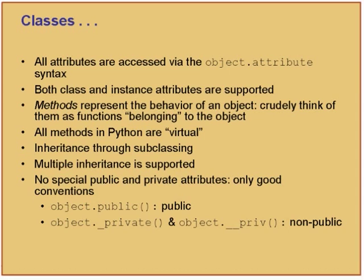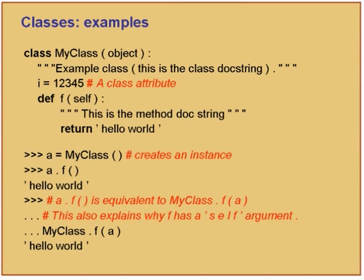Methods are what give behavior to an object. We have just looked at attributes; a method basically represents the behavior of the object. Crudely, think of them as functions that belong to the object. So, consider this example: MyClass derived from object, with a documentation string, a class attribute, and then a function f which returns 'hello world'. Notice that the function has a first argument called self. Typically a method in a class has the first argument set to self.